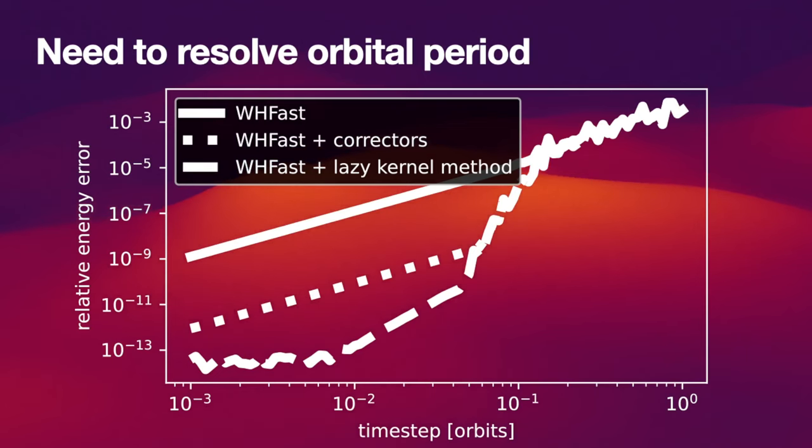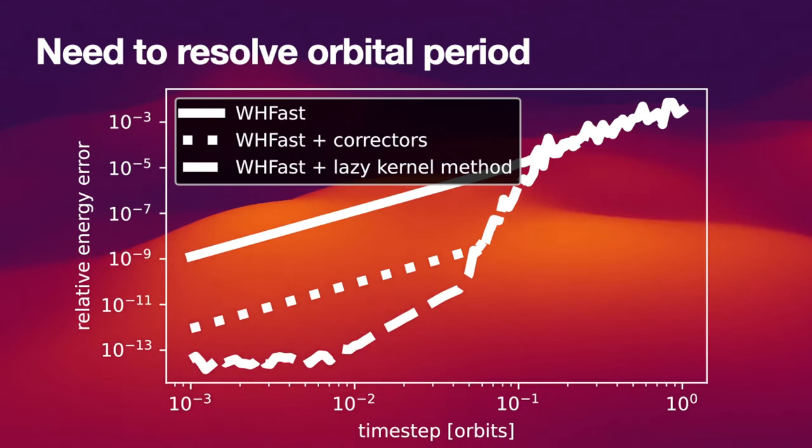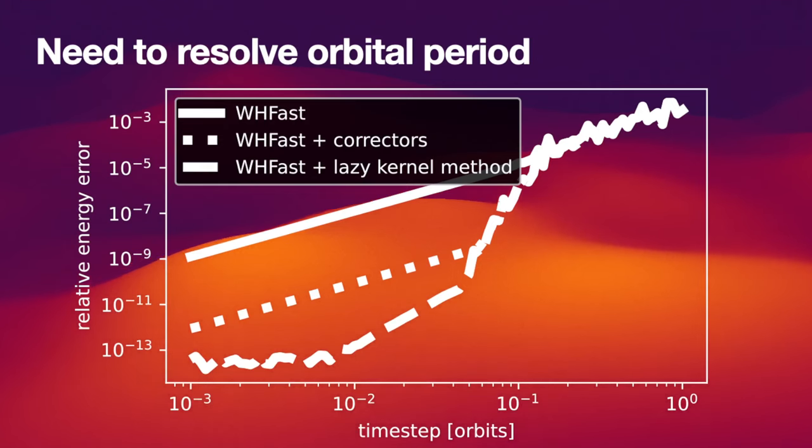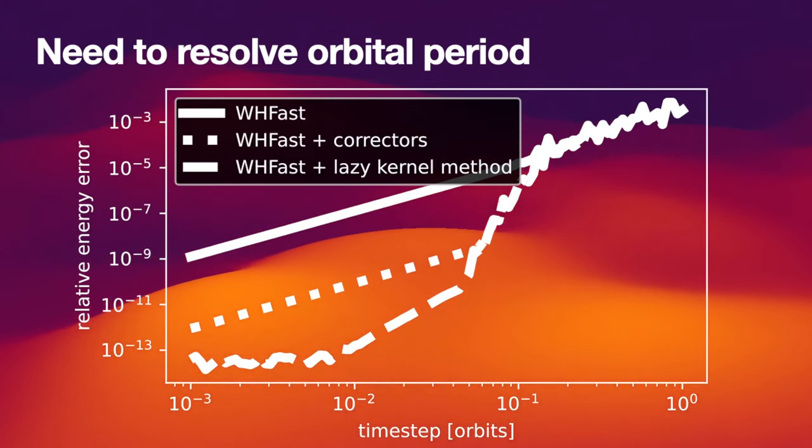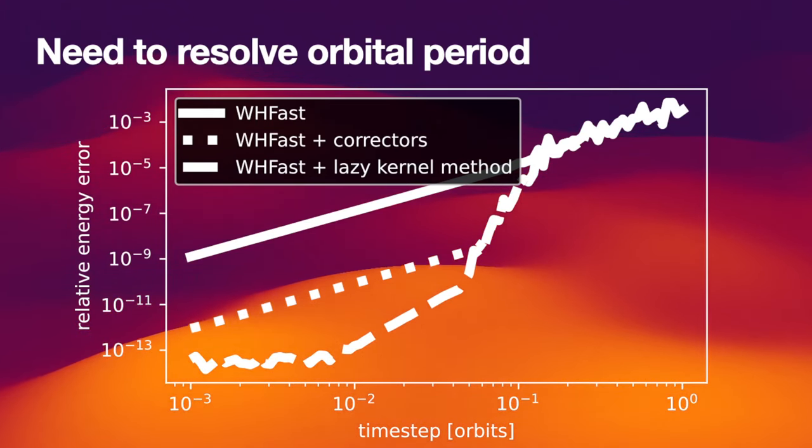So in reality, you're really looking at Wisdom Holman with a reasonable time step of 1% of the orbit period, giving you an accuracy of 10 to the minus 8, which is good enough for everything you need to do in most cases. And all these high order methods only give you a bit more accuracy over a relatively small range of time steps that you can choose from.